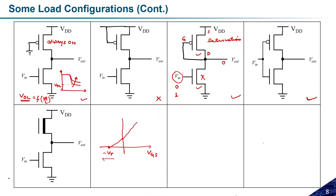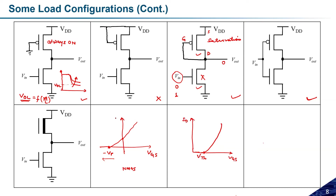This criteria is for the depletion-mode nMOS. For the enhancement-mode nMOS the characteristics look different — with threshold voltage Vth. This is the difference between the depletion MOSFET and enhancement MOSFET. For the enhancement device, it is normally in the off state and you must increase Vgs ≥ Vth to turn it on.